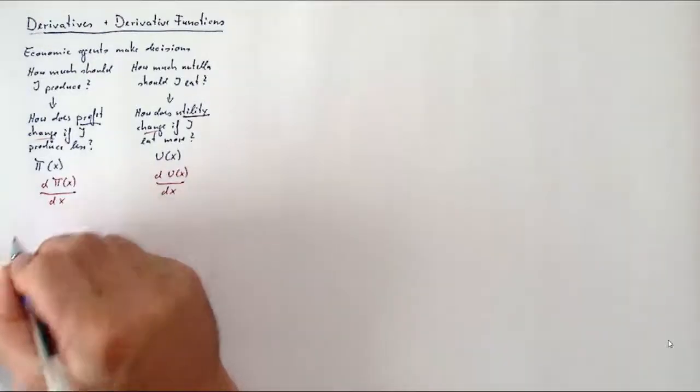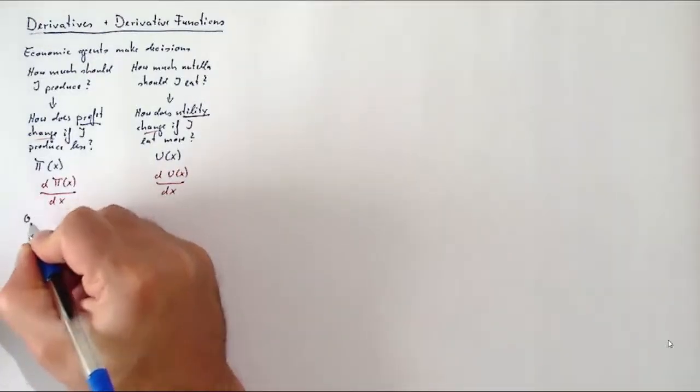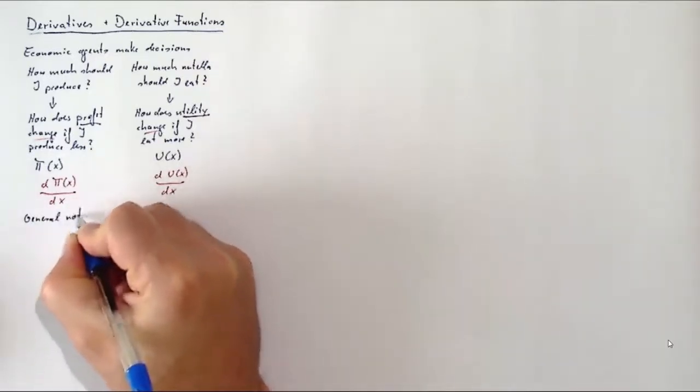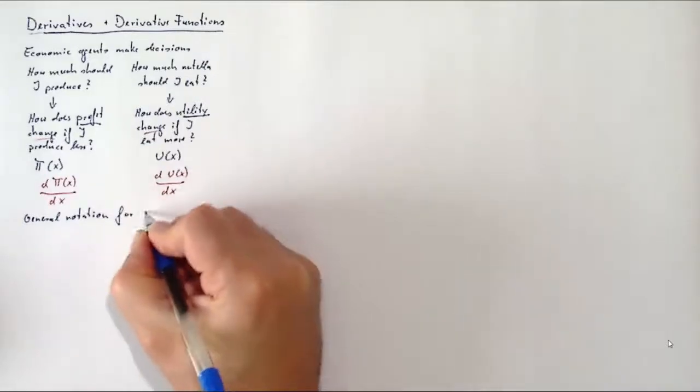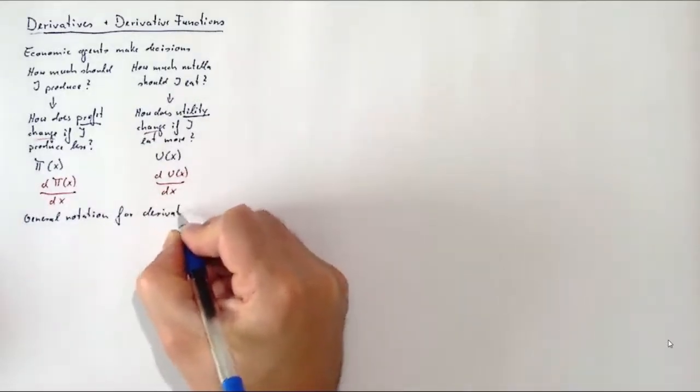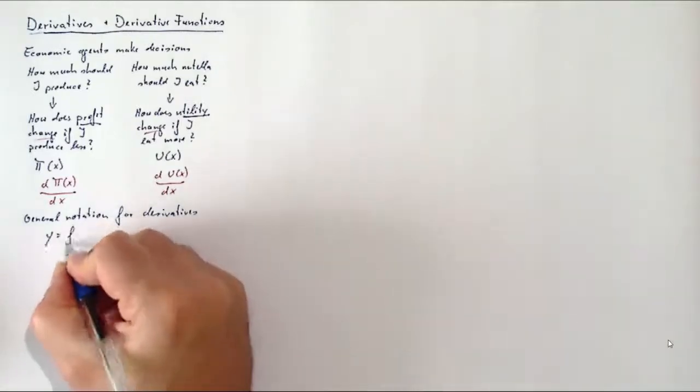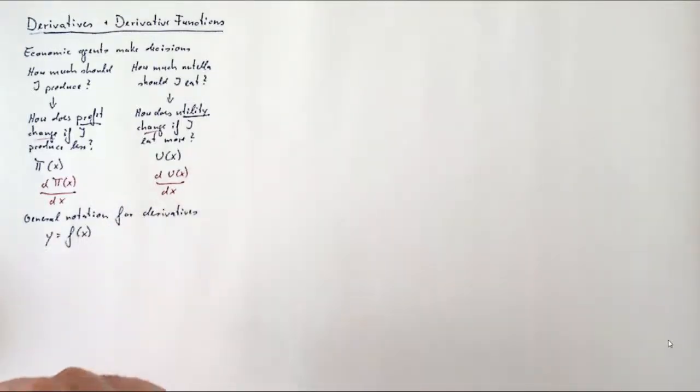The mathematical expression is dπ(x)/dx or du(x)/dx. The general notation we are using for derivatives is as follows: imagine we have some sort of function y that's a function of x—that could be profit or utility—and we are after the derivative.